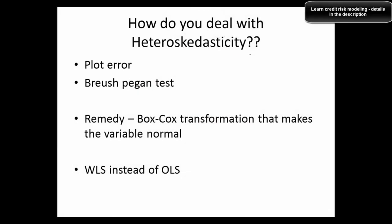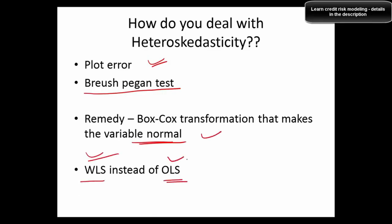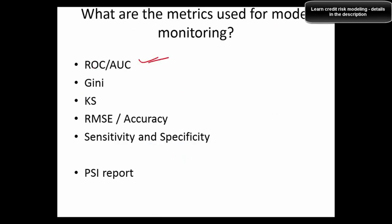How do you deal with heteroscedasticity? First, do manual checks like plotting the errors to detect its presence. The Breusch-Pagan test is a statistical test to formally confirm whether heteroscedasticity is present. Remedies include taking the Box-Cox transformation to make the variable normal, or using WLS (weighted least squares) instead of OLS. What are the metrics used for model monitoring? ROC, AUC, Gini coefficient, Kolmogorov-Smirnov (KS) statistic, RMSE, accuracy, sensitivity, specificity, PSI, and so on.